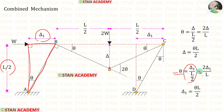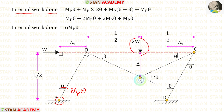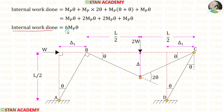Now let us find the internal work done for the combined mechanism. At point A: MB times theta. Under the point load: MB times 2 theta. At point C, we add the two angles theta plus theta and multiply by MB, giving MB times 2 theta. At point D: MB times theta. Adding all of them, the internal work done equals 6 MB theta.